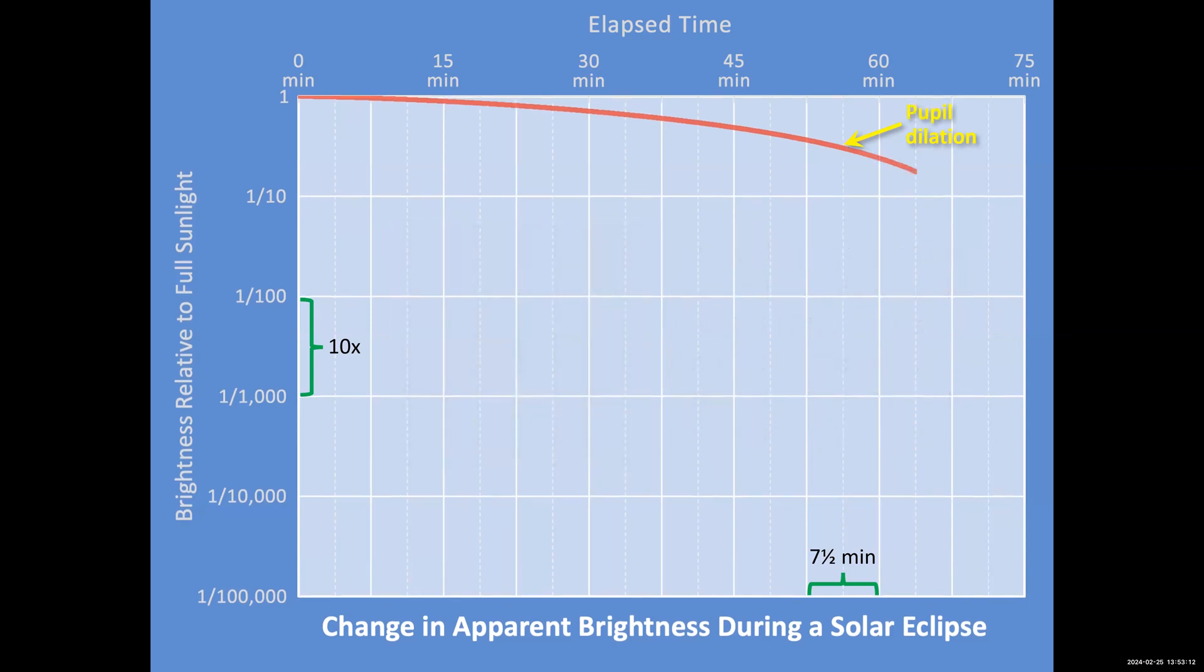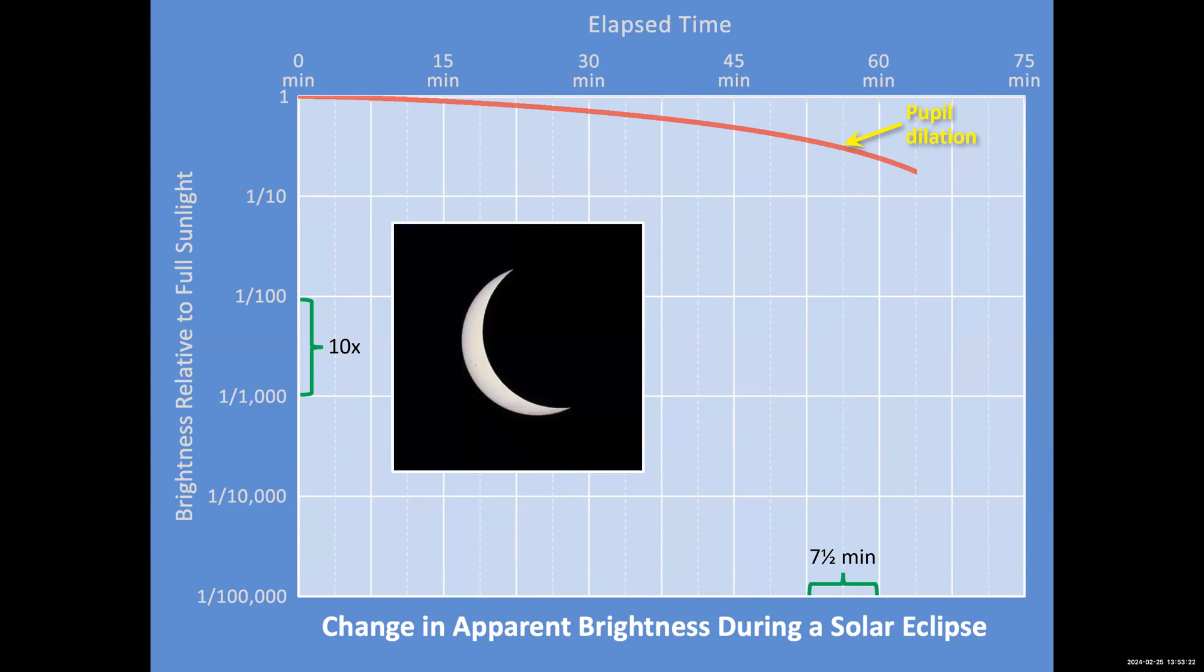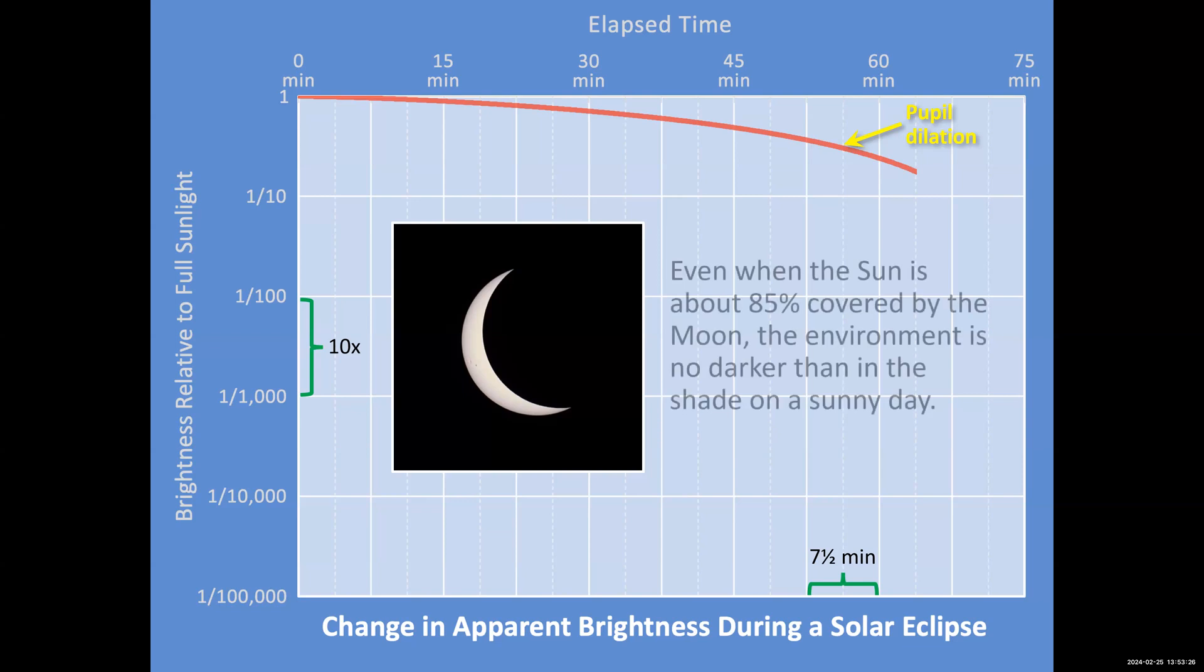Now at this point, we start to notice there's a change in the brightness. It's kind of like the sun has just set, after the sunset, but it's still kind of bright blue. So we notice it's different, but it's still very bright out there. At 85% eclipse, the moon has covered 85% of the sun. It's still no darker than being in the shade on a sunny day.